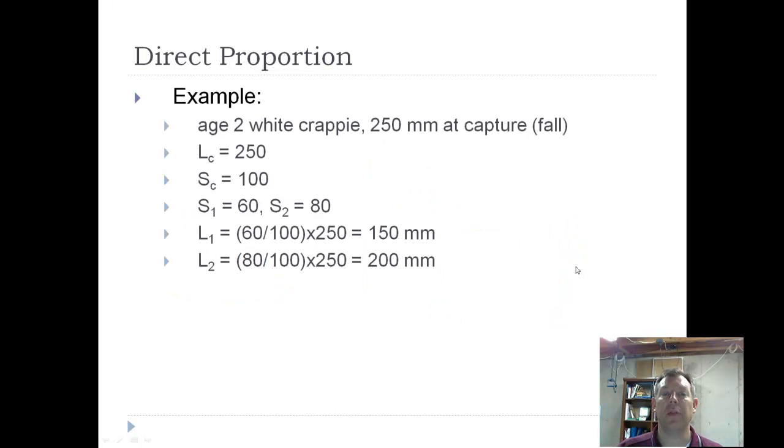So here's an example with an H2 white crappie. You see that the length of the fish when it was captured was 250 millimeters. The length of the scale is 100. Now this is unitless. It's just 100 pixels or something if you measure it on the computer, or it could be in millimeters. It doesn't really matter. It's just a relative proportion. You see that the length to annulus one was 60, the length to annulus two was 80. You plug it in. So this fish was 150 millimeters at H1 and 200 millimeters at H2.